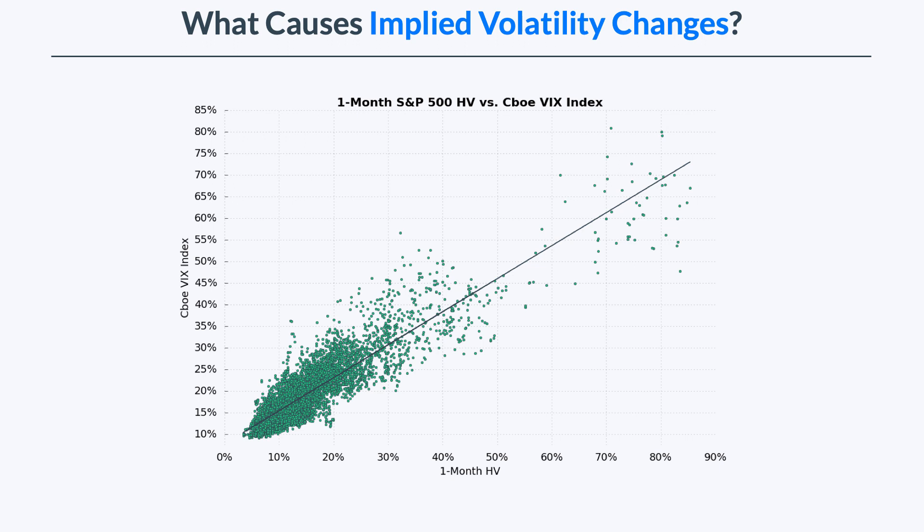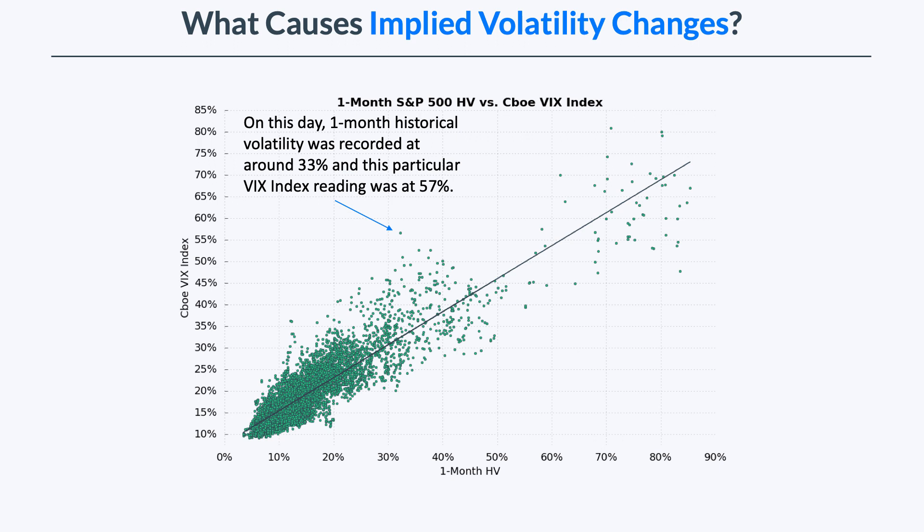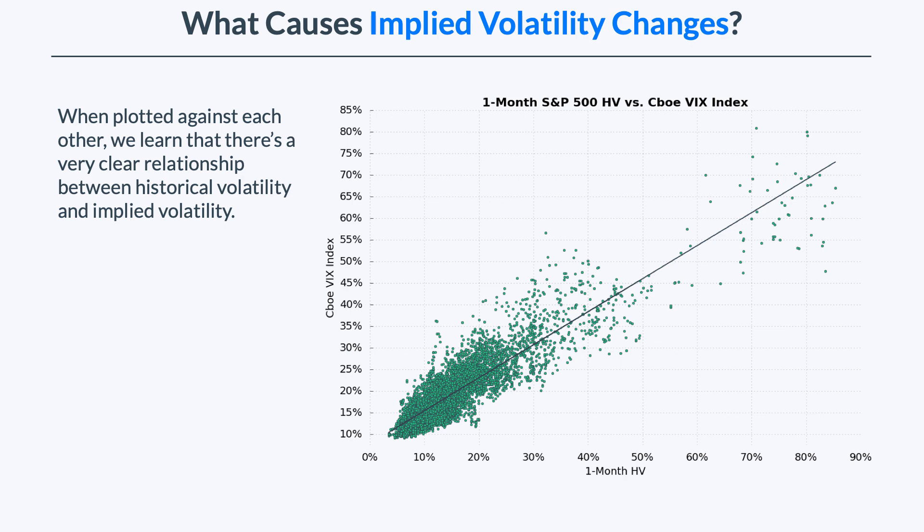On this chart, we're looking at the one-month historical volatility of the S&P 500 on the horizontal axis, and comparing that against the VIX Index on the vertical Y-axis. To give you an example of what each dot represents: the one I'm pointing at shows that on a particular day, the one-month historical volatility was recorded at around 33%, and on that day the VIX Index was at 57%. When we plot historical volatility against the VIX Index, we see a very clear relationship between historical volatility and implied volatility.